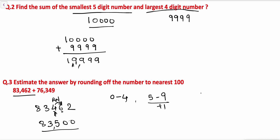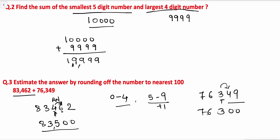Let's take another number: 76349. Here we have to round off to the nearest hundred. 3 is the rounding number and the digit just right of it is 4, which is from 0 to 4, so the rounding number remains as it is and all digits to the right become zero. So 76349 rounds off to 76300.